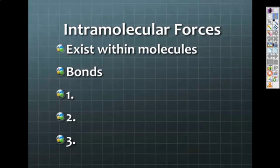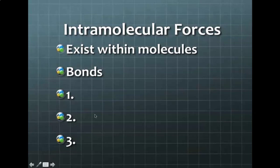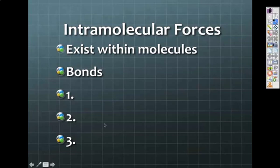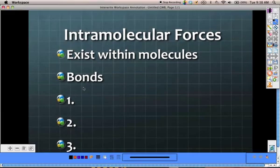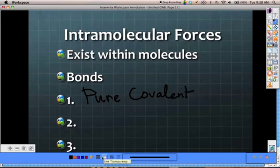So what three types of bonds do we have? Pure covalent is one of them, absolutely. Okay, pure covalent. Ionic. And our third one? Polar. Polar covalent.